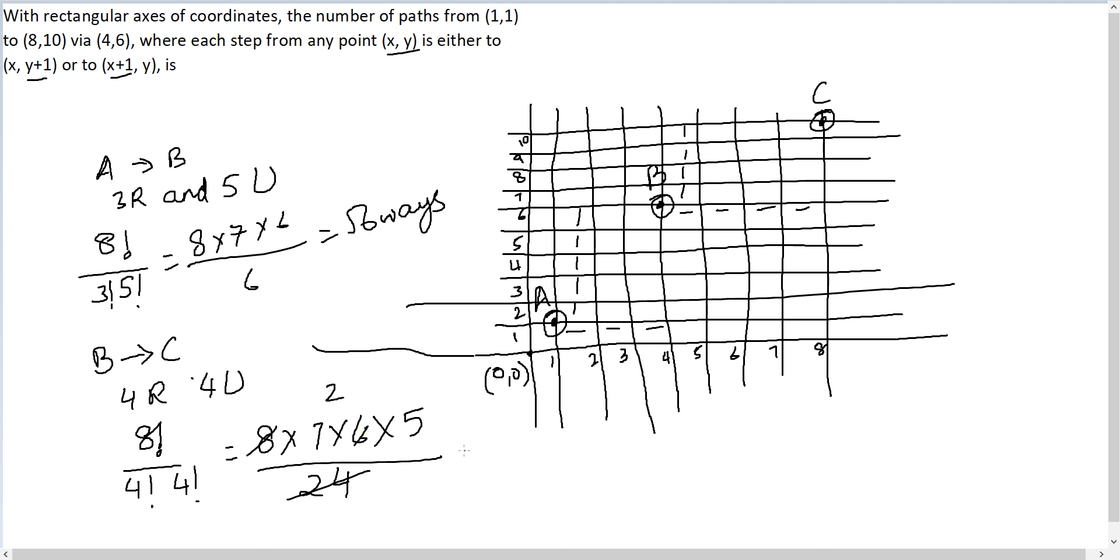So altogether from A to B to C, the total number of ways is 56×70. 56×7 is 392, so 56×70 is 3920 ways.